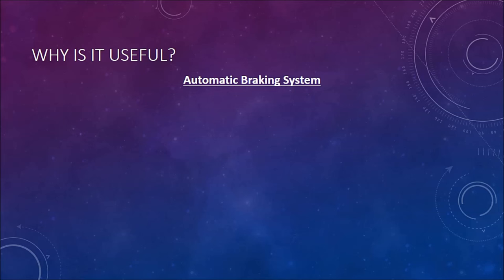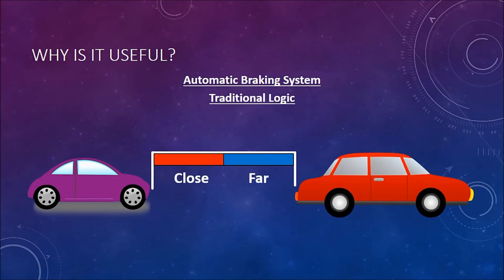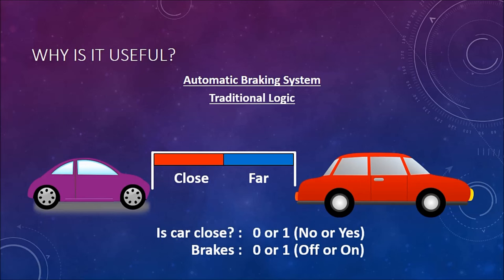So why is it useful? Well, consider you have an automatic braking system in your car that can decide when to brake. Using traditional logic, it might look something like this, where you have a car in front of you that's far away or close, and there's some value in between where it switches. The car being close can either be yes or no, 0 or 1, and the brakes can either be on or off, again 0 or 1.